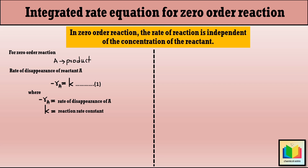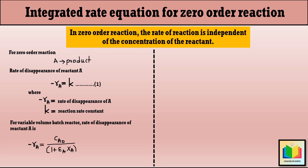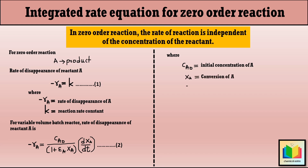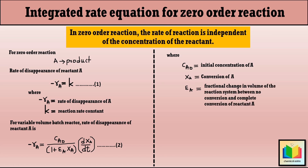As we are determining the integrated rate equation for a zero order reaction in a variable volume batch reactor, the general equation of the rate of disappearance of A for a variable volume batch reactor can be written as: minus R_A equals C_A0 divided by (1 plus epsilon_A X_A) into dX_A/dt (equation number 2), where C_A0 is the initial concentration of A, X_A is the conversion of A, and epsilon_A is the fractional change in volume of the reaction system between no conversion and complete conversion of reactant A.